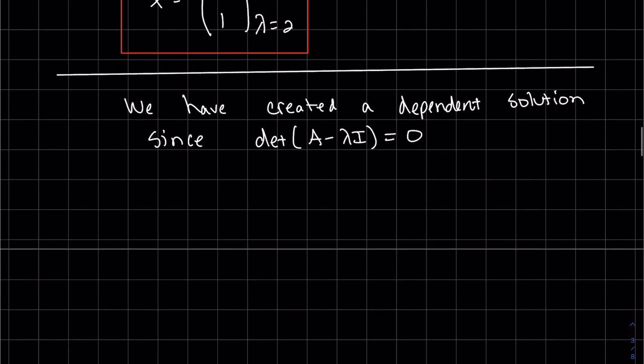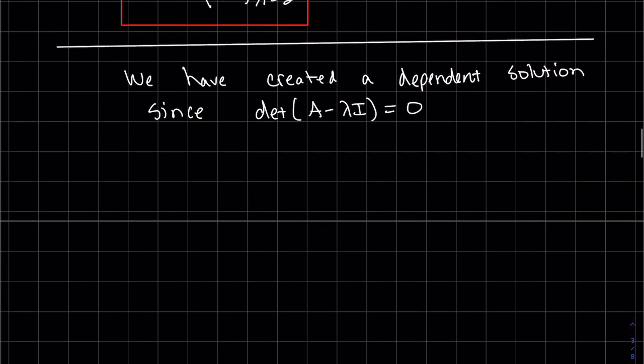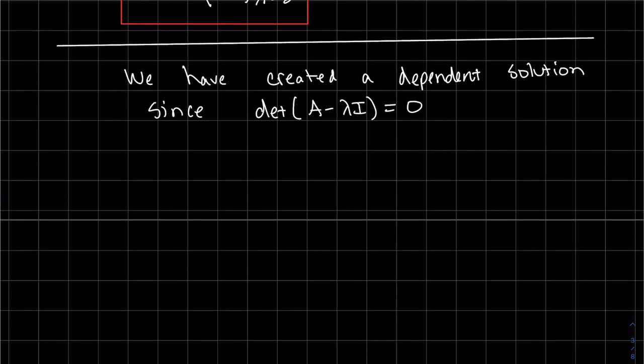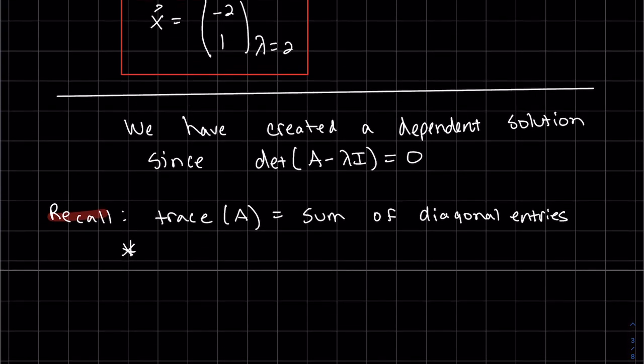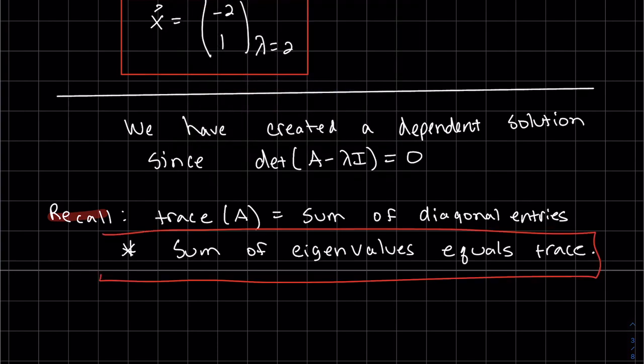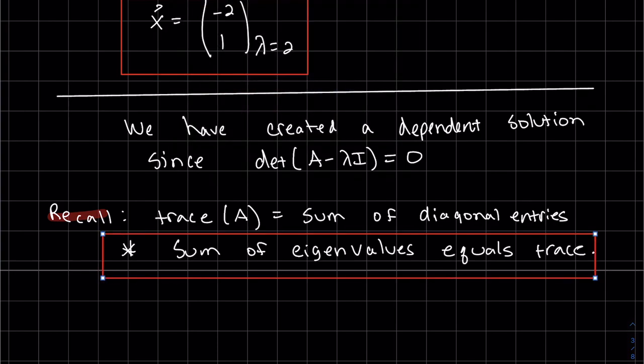One more check that we can use, which is actually kind of neat, is the trace. Just in words, it's the sum of the diagonal entries. And our last check that we got our eigenvalues right is the sum. So the fact is that the sum of your eigenvalues, if you add up your eigenvalues, it does equal to the trace.